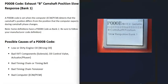Today I'll talk about a P000B code — what it is and how you go about fixing it. A P000B code is an exhaust B camshaft position slow response, bank one.